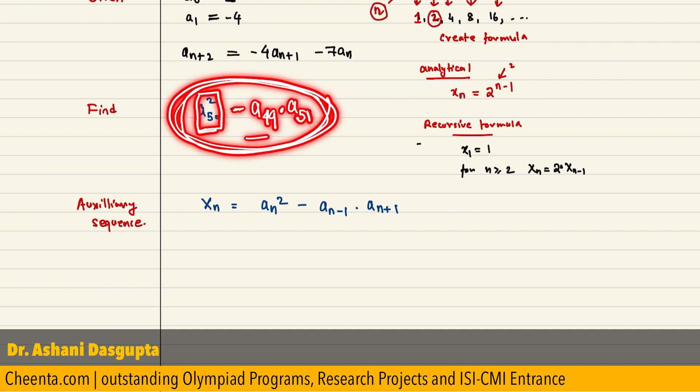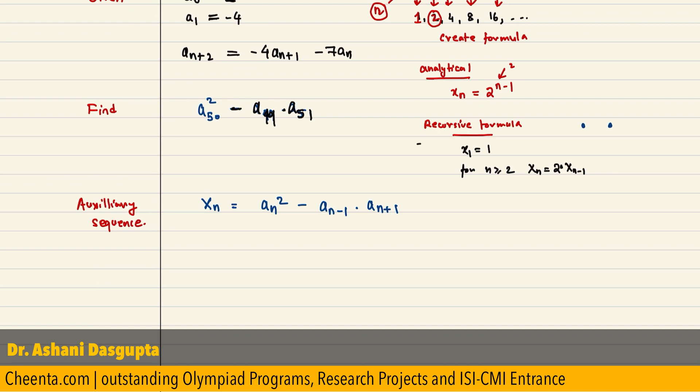The middle term square minus the previous term times the next term. So, if you have three terms in a sequence, the middle one, the previous one, the next one,